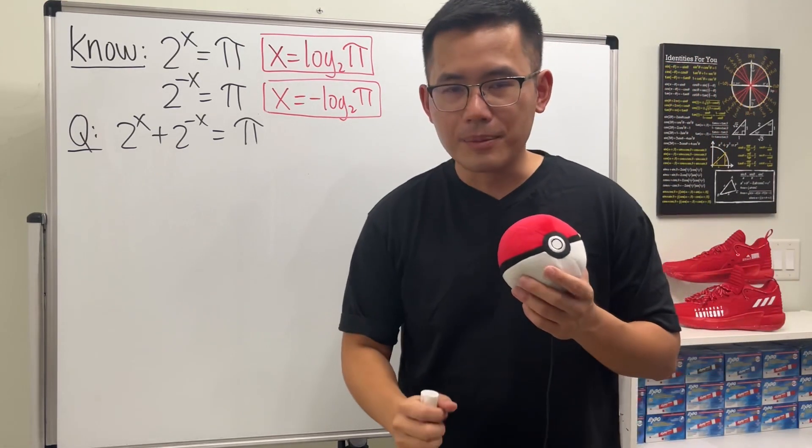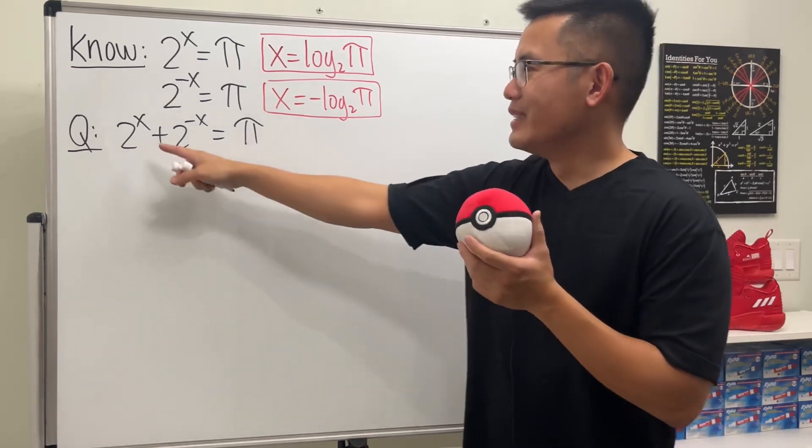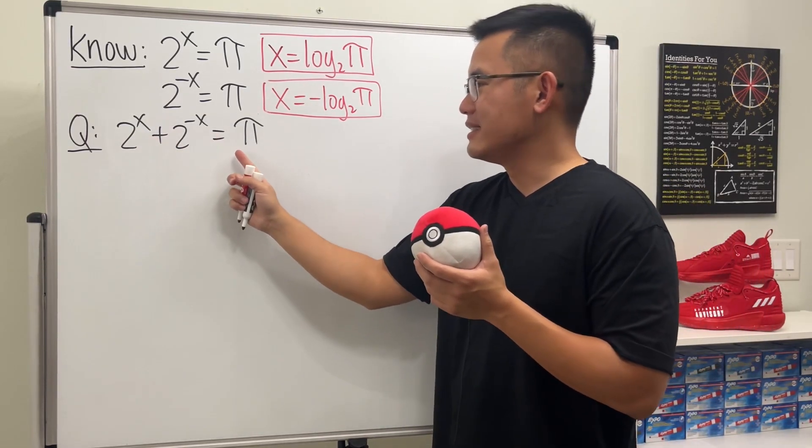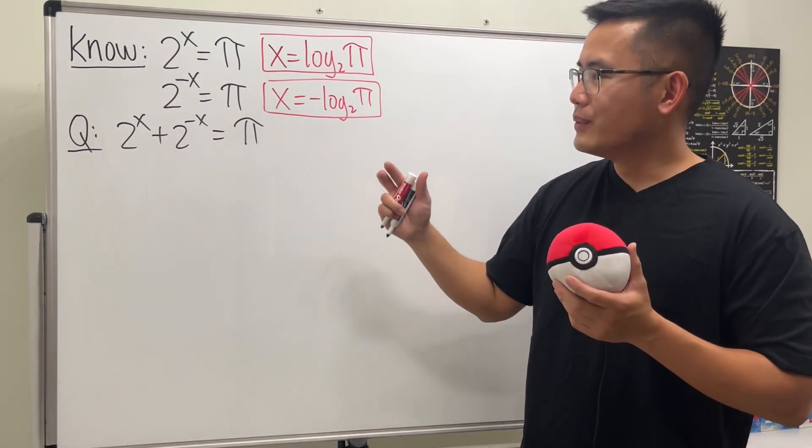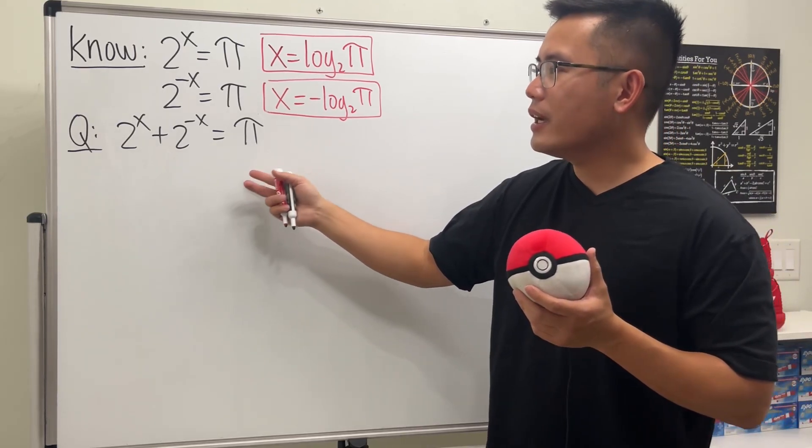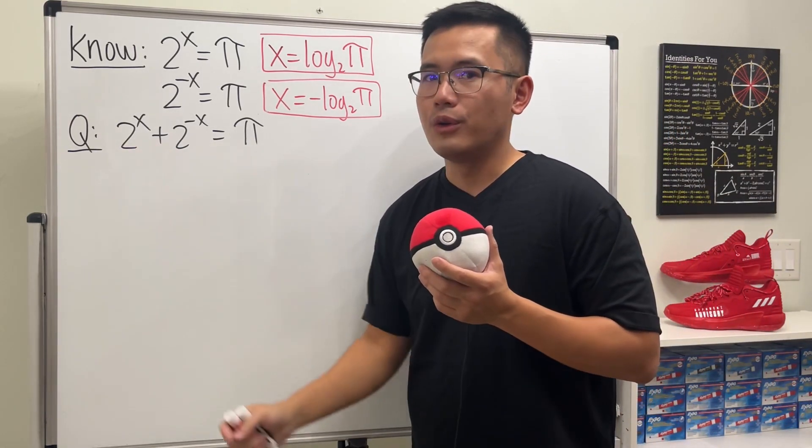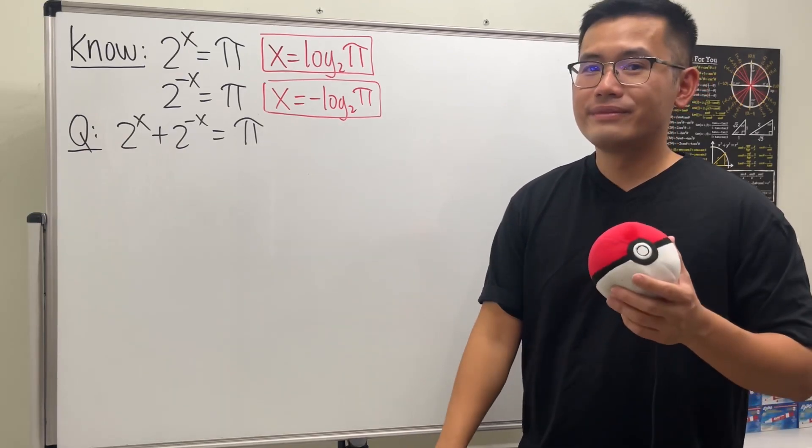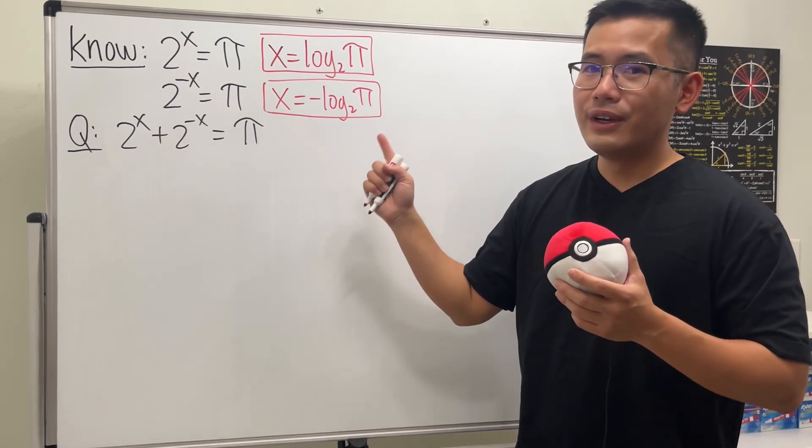Now, have you ever thought about what if we have 2 to the x plus 2 to the negative x is equal to pi? We see we have an exponential equation, but it has two exponential parts. So what do we do? Well, as always, please pause the video and try this first.